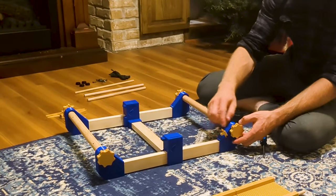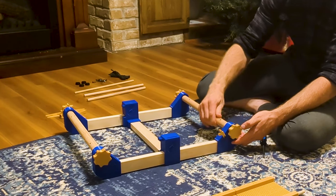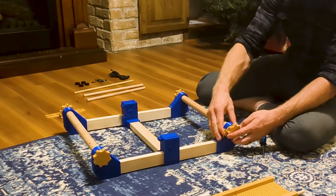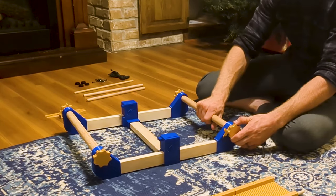With the pawl in position, it can be moved out of the way, in which case the beam will rotate freely, or it can be engaged like this, and then it will stop that beam from rotating forward.